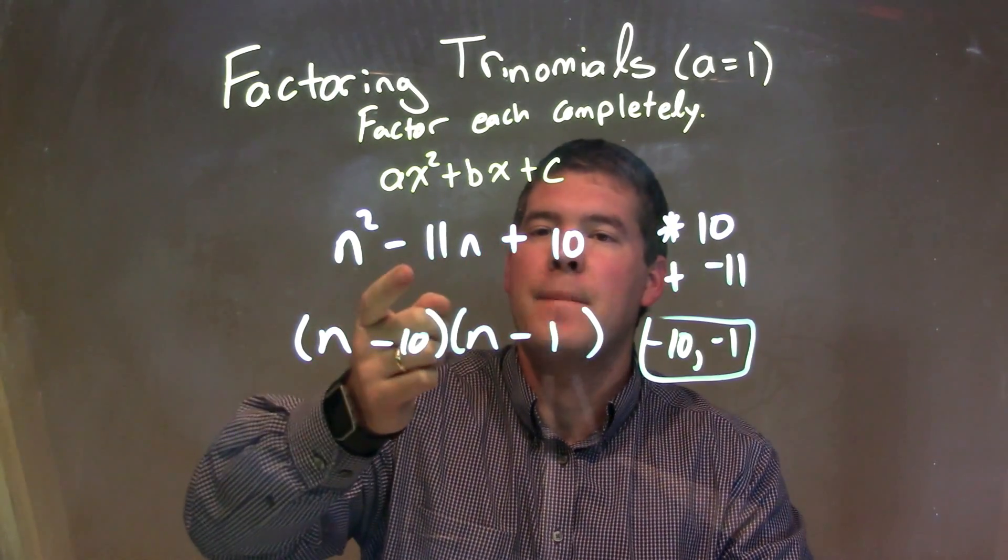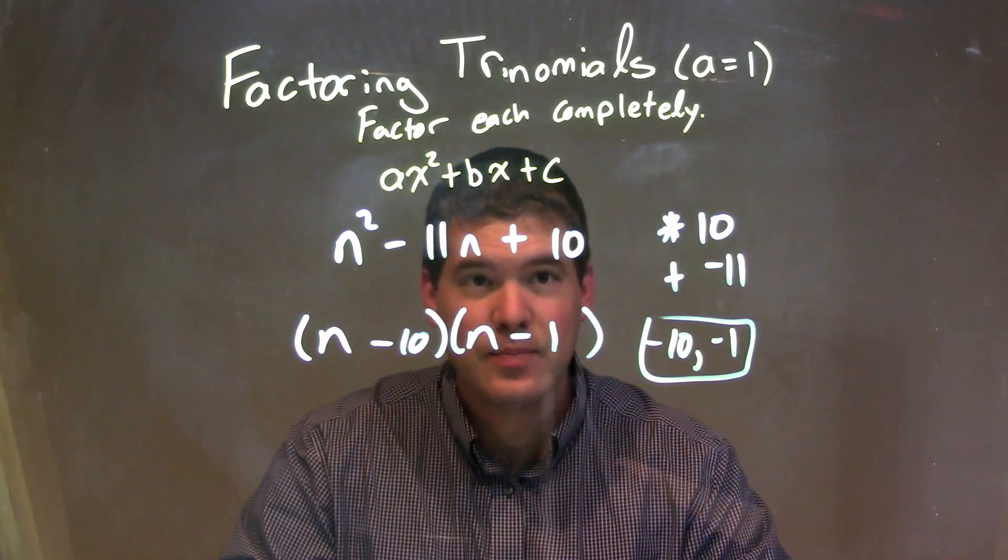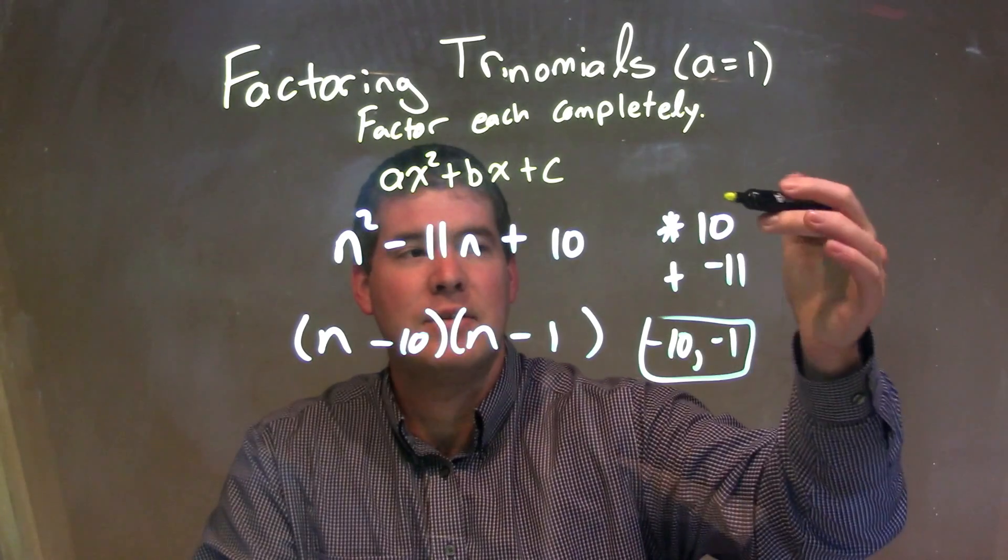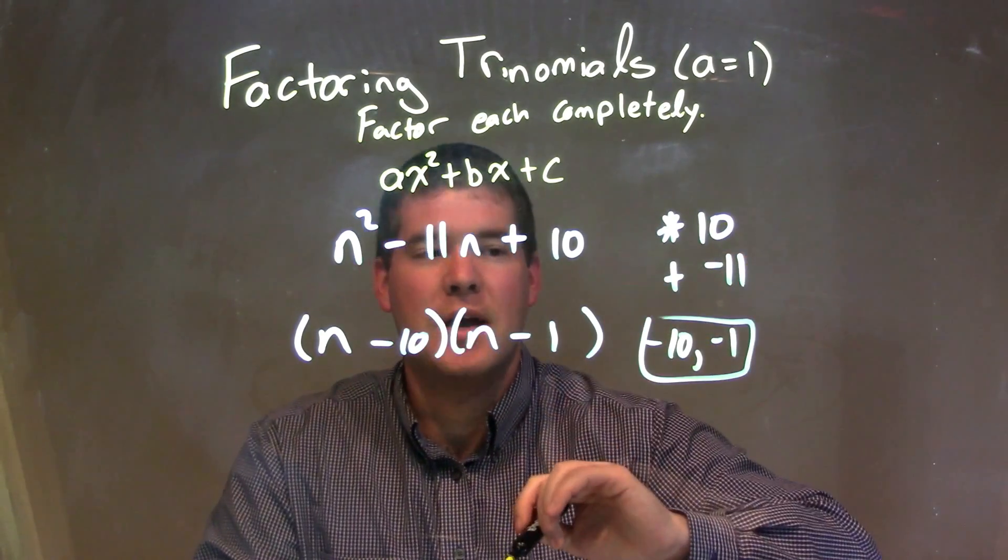So let's recap. We're given n squared minus 11n plus 10. We have to ask ourselves the question: what two numbers multiply to be 10 but add to be negative 11?